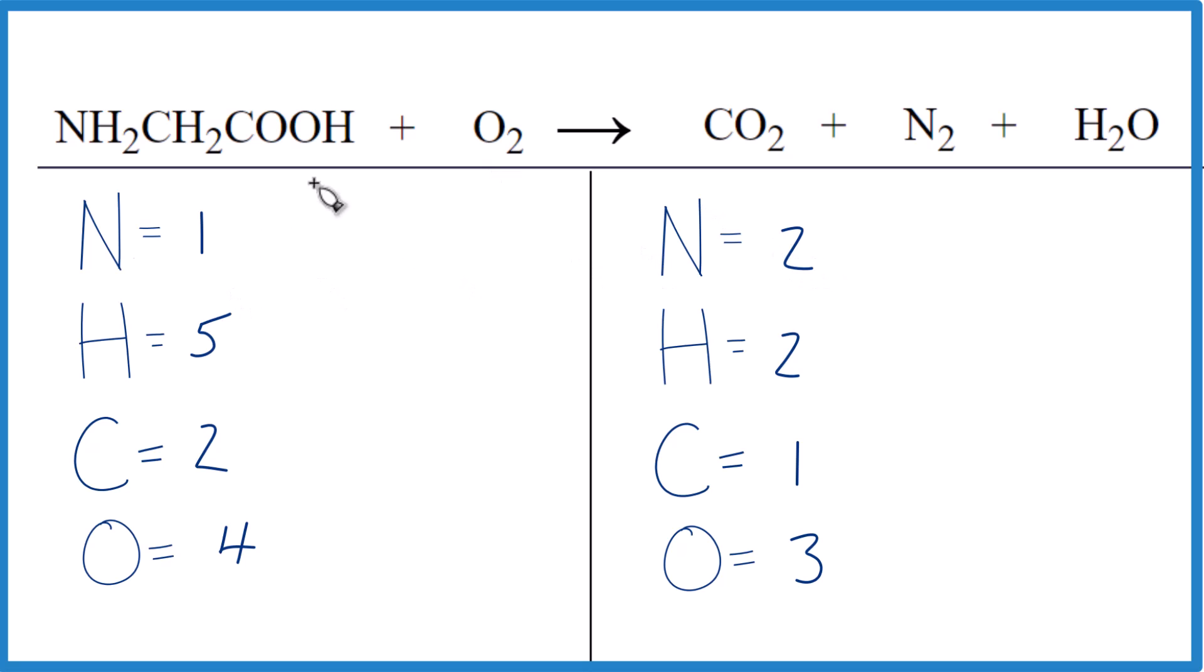Let's deal with the nitrogen first. We're going to leave the oxygen till last, and then usually it's good to do the hydrogens a little bit later on as well. So let's start with nitrogen. If we put a two here, that would give me one times two, two nitrogen atoms. Those are balanced,